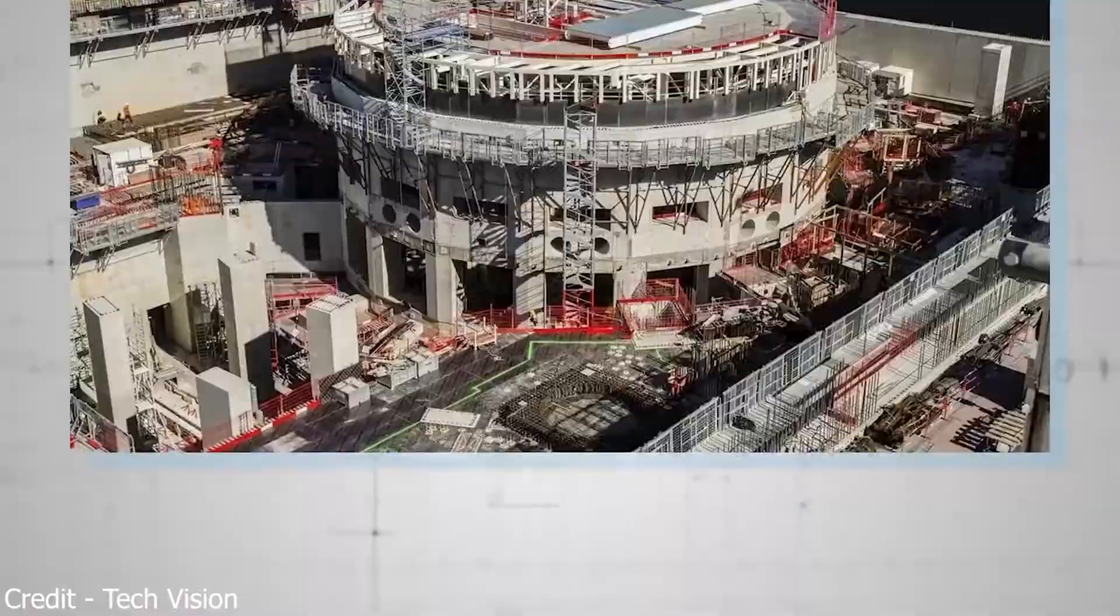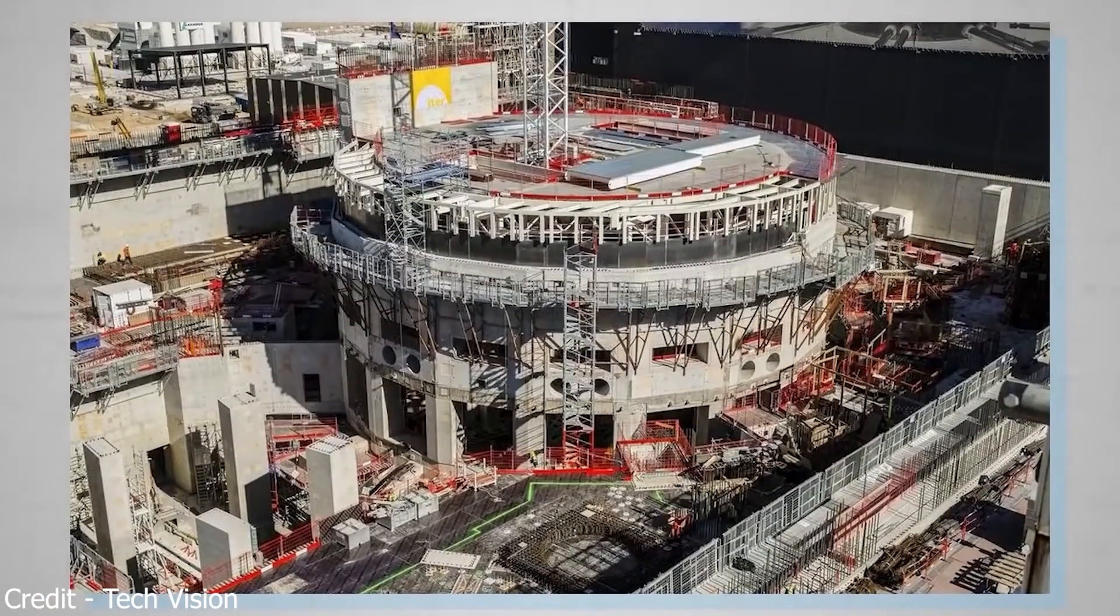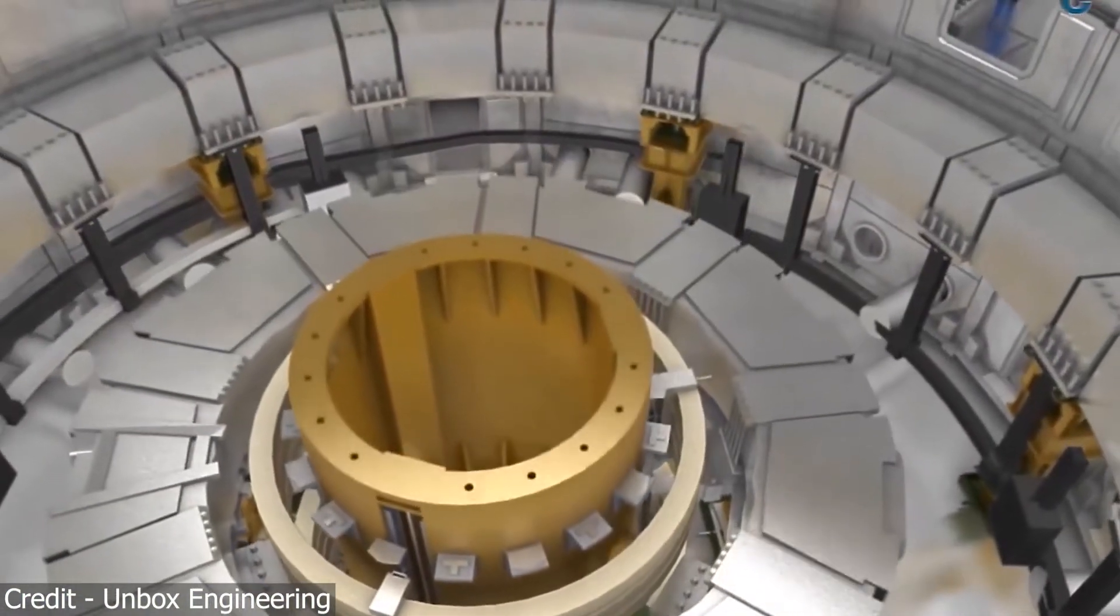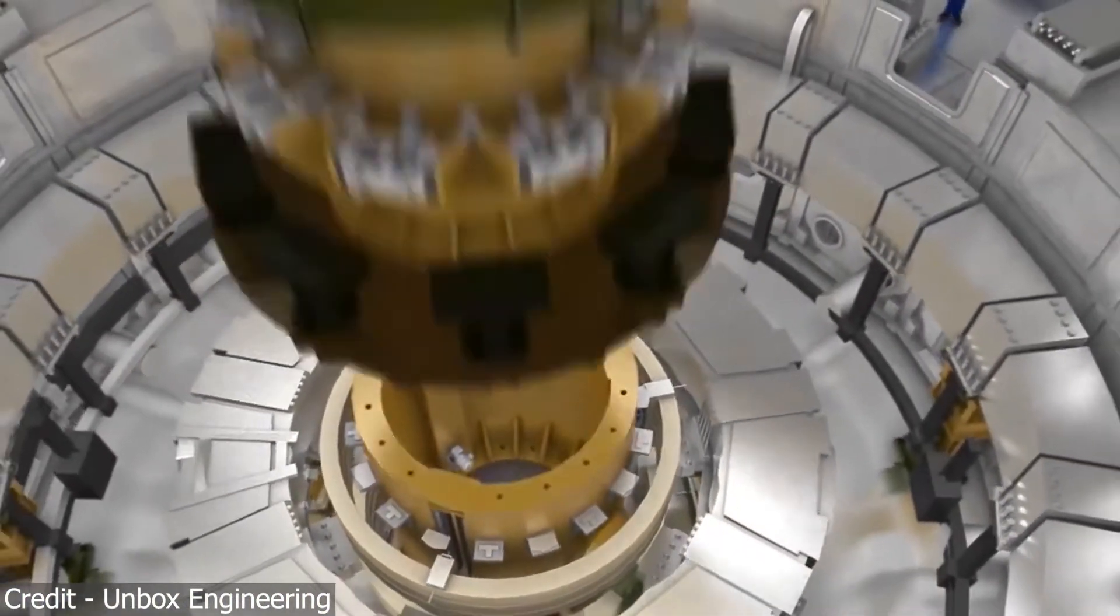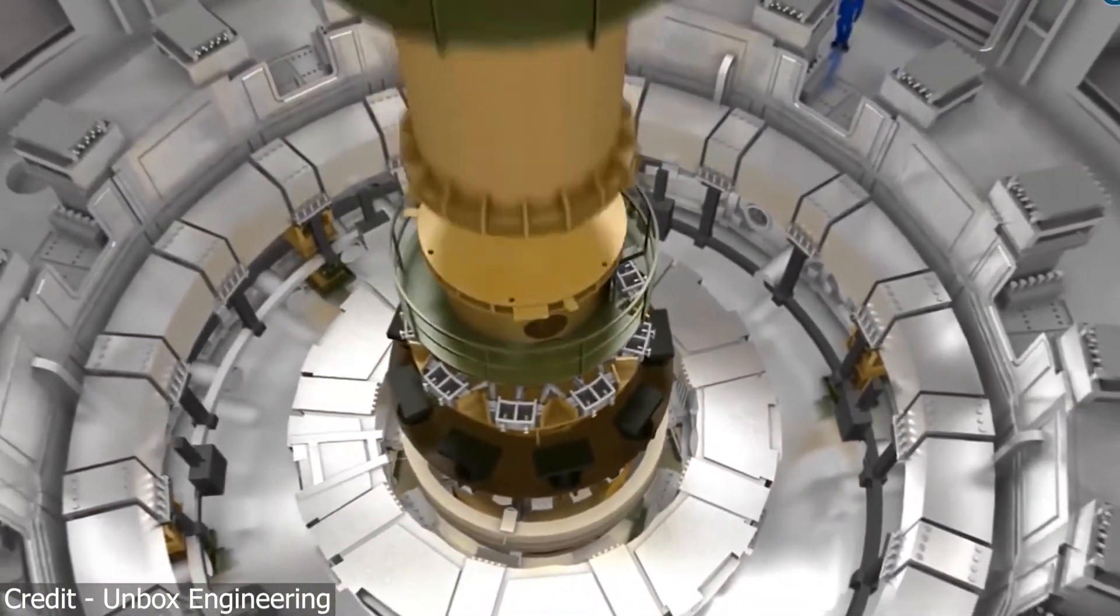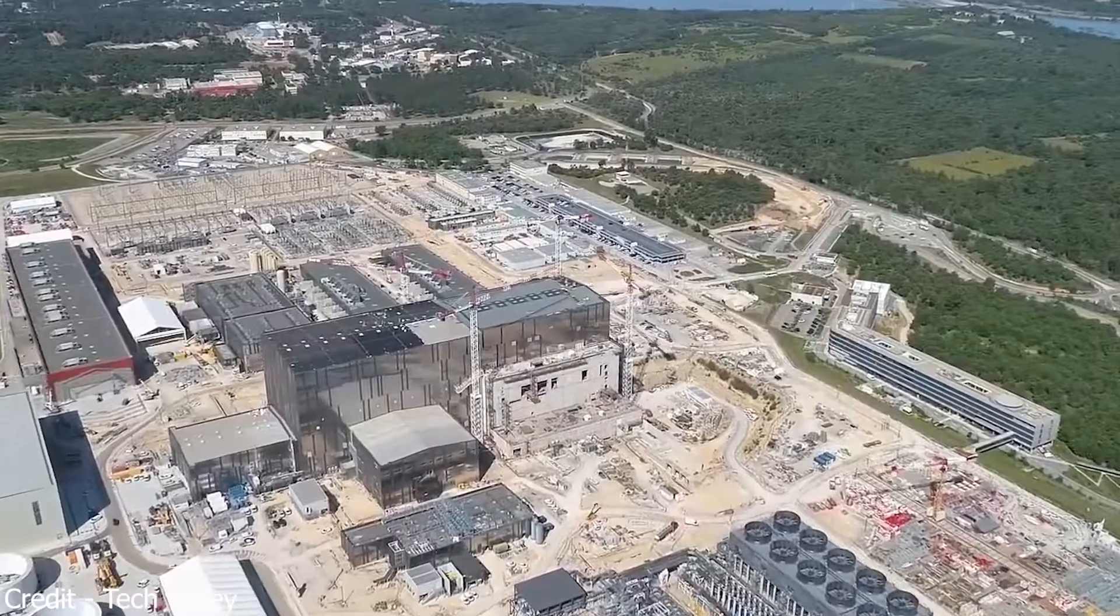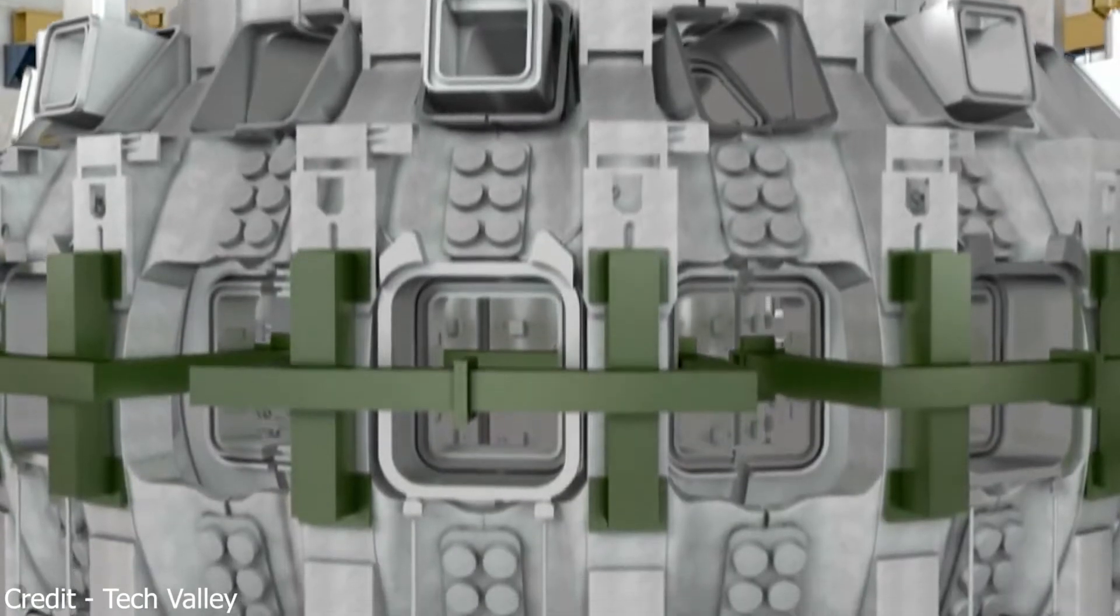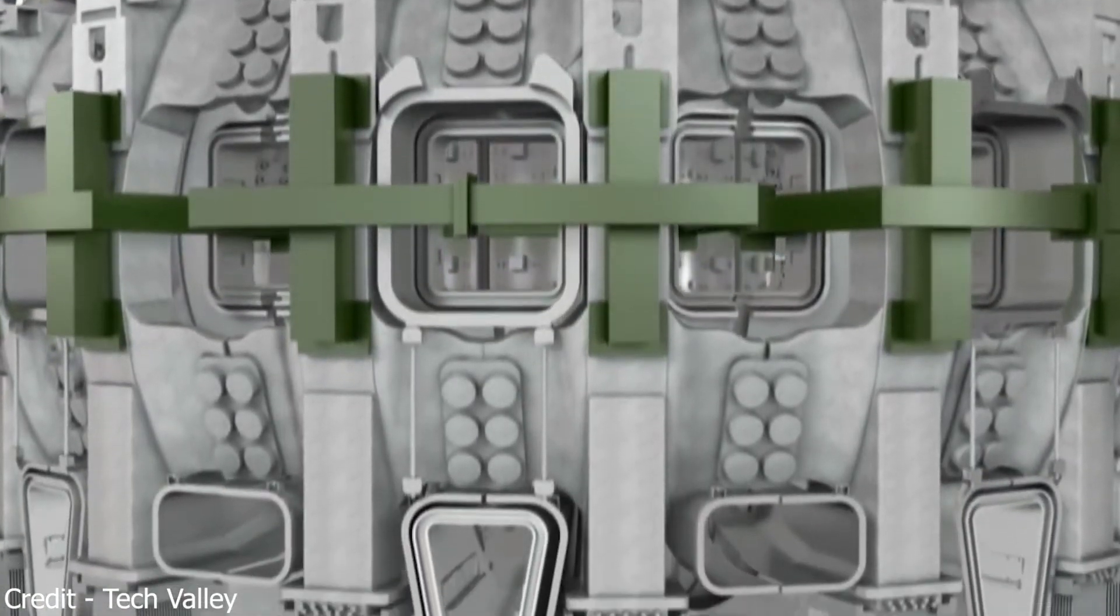The aim for ITER was to build a smaller model of a star inside a laboratory that they would be able to control. For that to happen, they built a 23,000-ton cylinder where intense superconducting magnets will attempt to keep a 15 million degrees Celsius plasma contained for fusion to occur.